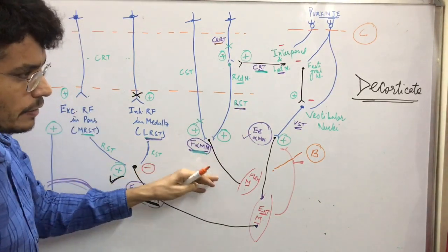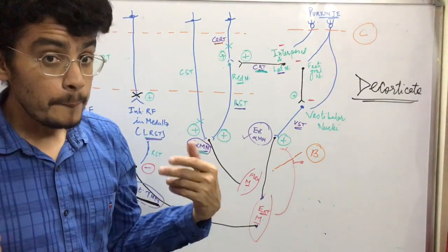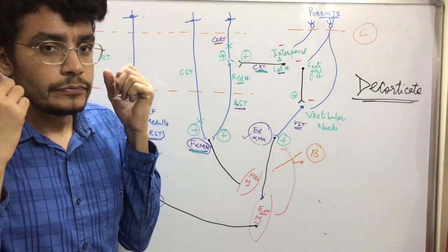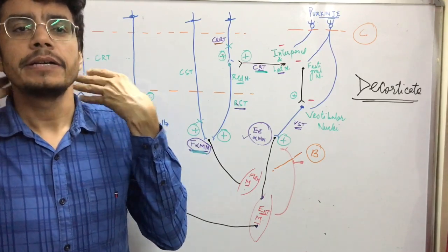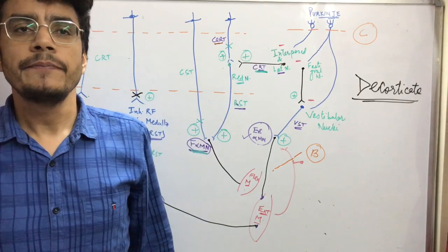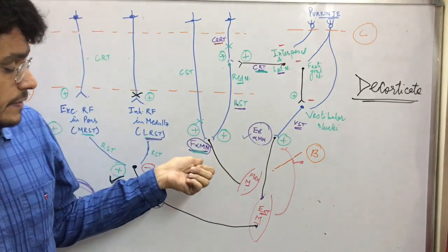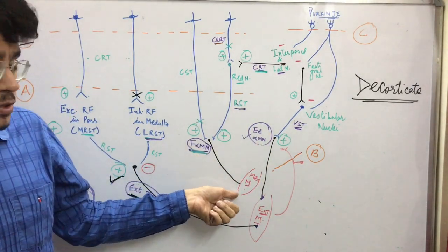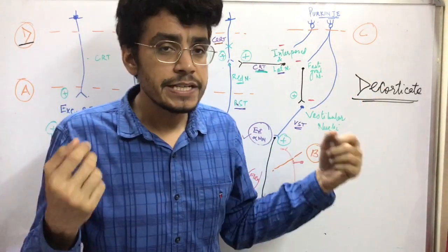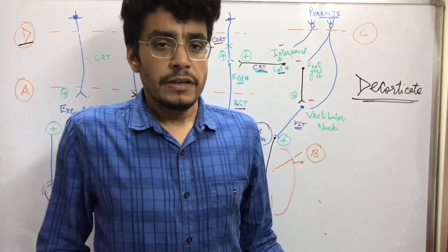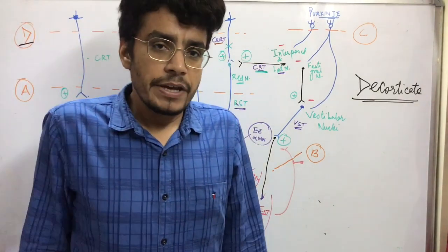So it will stimulate the flexor alpha motor neurons — specifically the flexor alpha motor neurons of the upper limb — and there will be flexion of the upper limb. There is extension of the neck, extension of the back, extension of the lower limb, but the red nucleus is still intact and stimulating the flexor alpha motor neurons. So there will be flexion of the upper limb. The decorticate rigidity is not all extension — the reticulospinal tract makes all extensor muscles hypertonic.